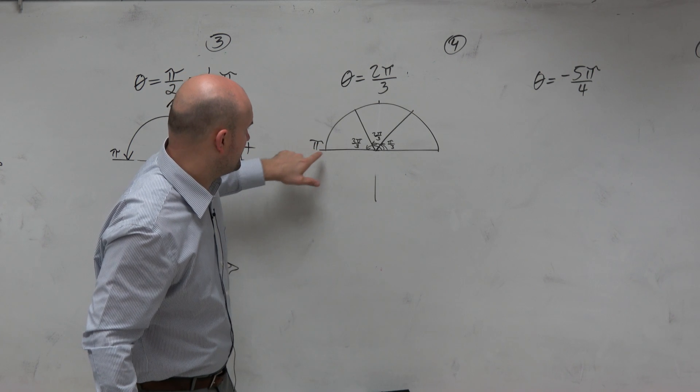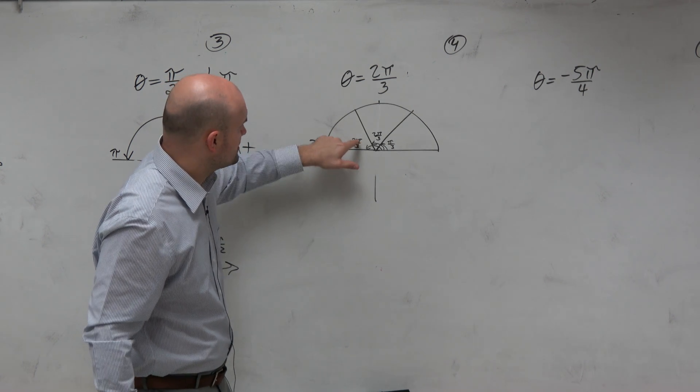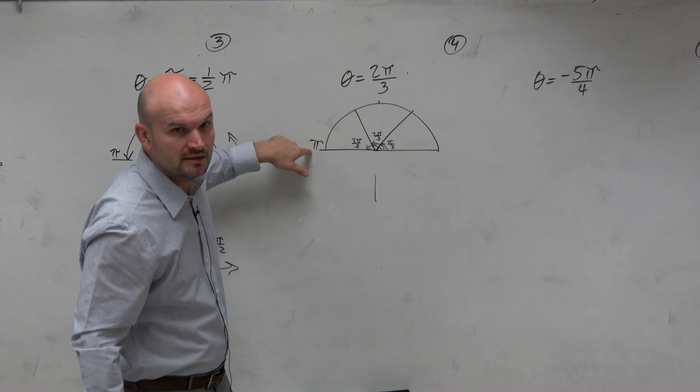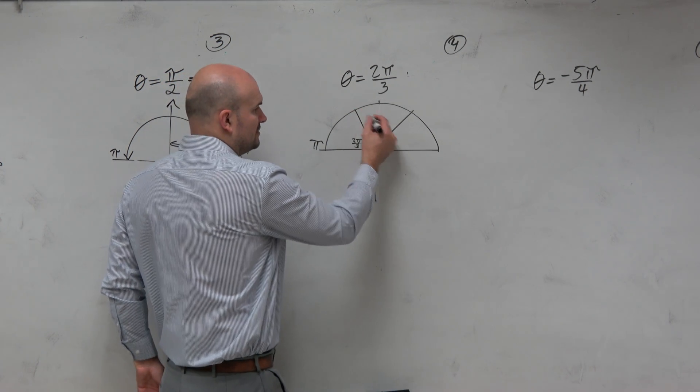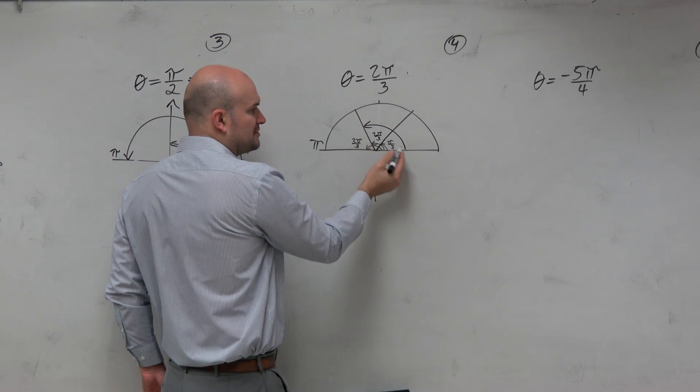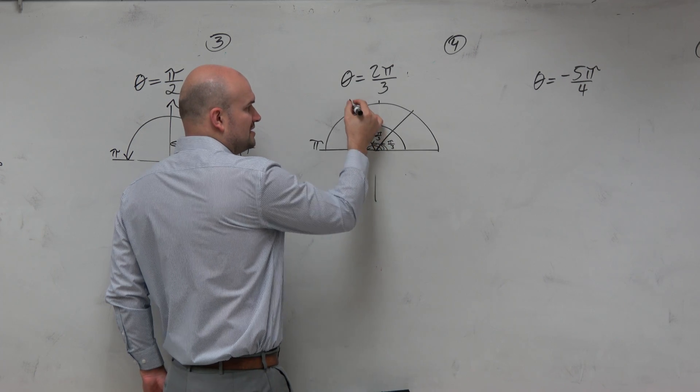And we know 3π over 3, sorry not 3 thirds, 3π over 3 is the same thing as π, right? So we can see though that the measurement from here to here is going to be 1 to 2 thirds, and that's going to be our angle.